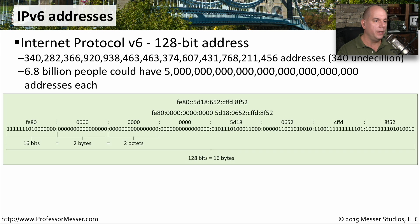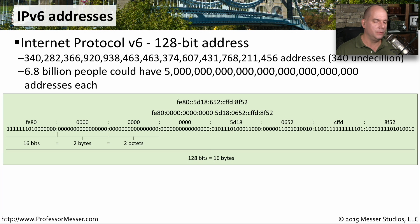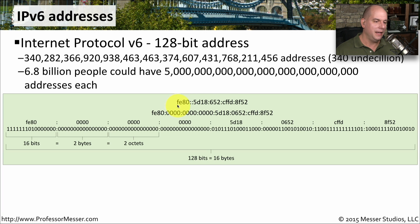If we were to take all 128 bits and draw it out, it looks something like this. One thing that's very different with IPv6 versus IPv4 is that instead of expressing addresses in decimal, we talk about IPv6 addresses in hexadecimal. You'll see the numbers 0 through 9 as well as the letters A through F, for a total of 16 characters. Here is an example IPv6 address: FE80::5D18:652:CFFD:8F52.